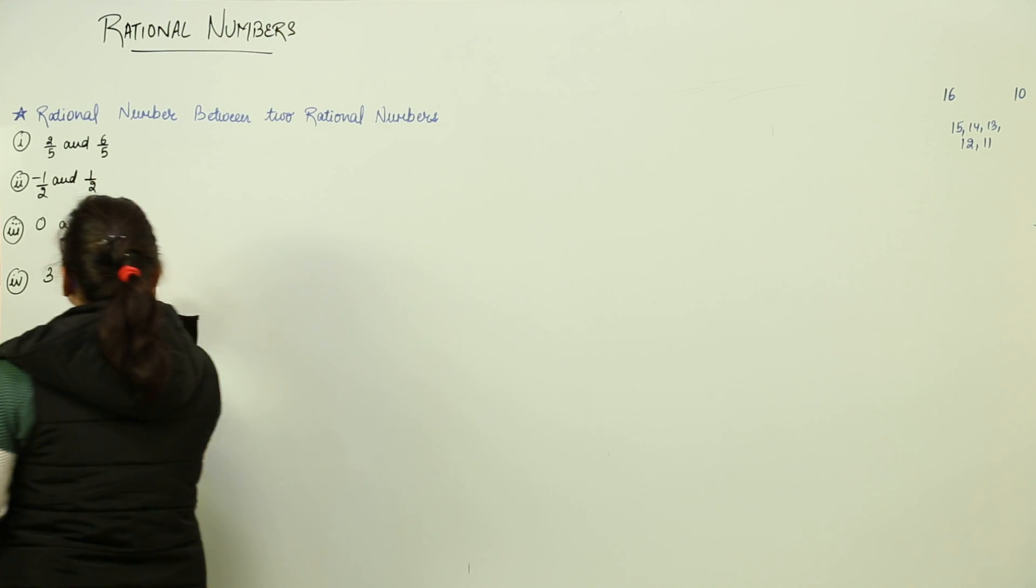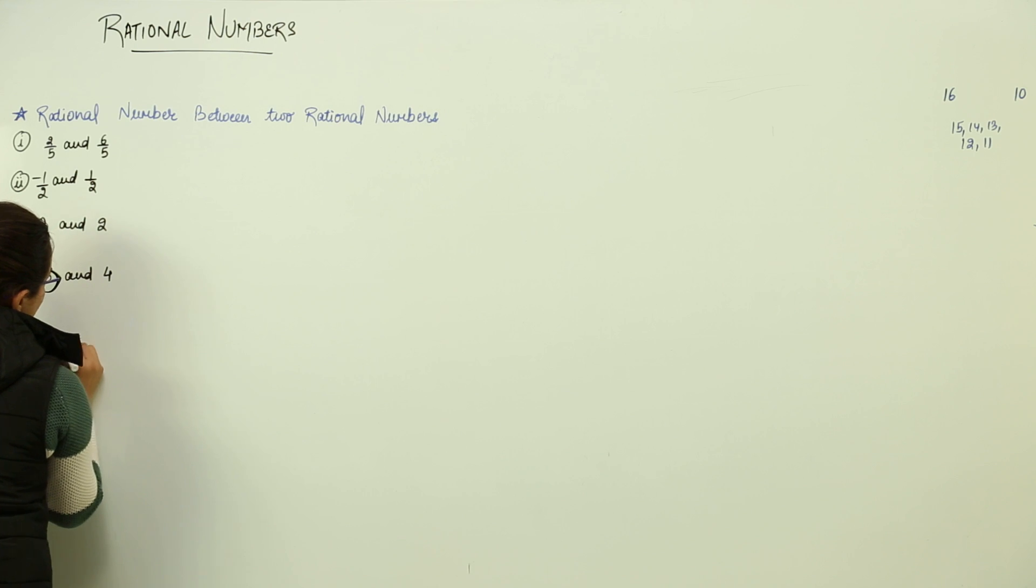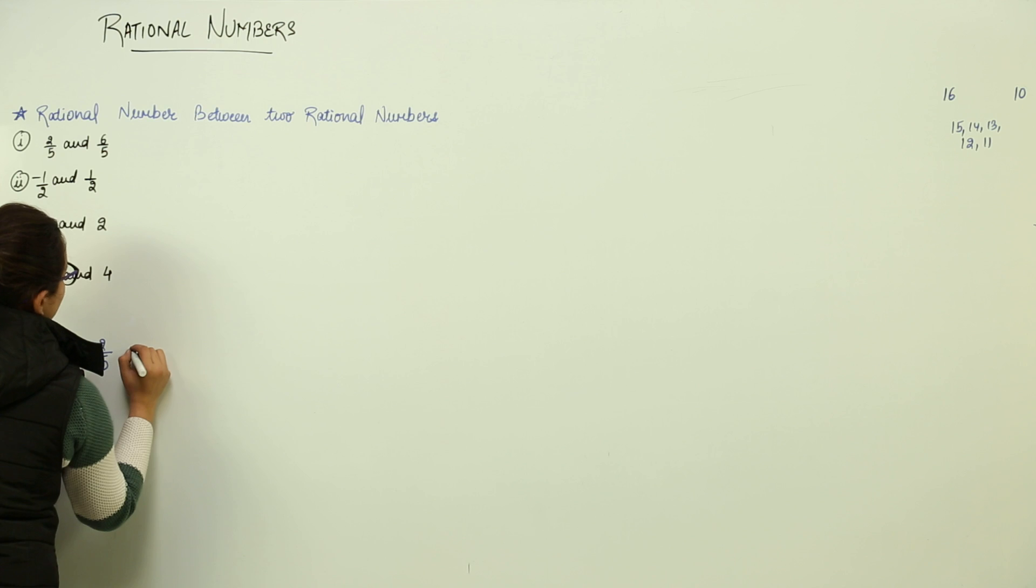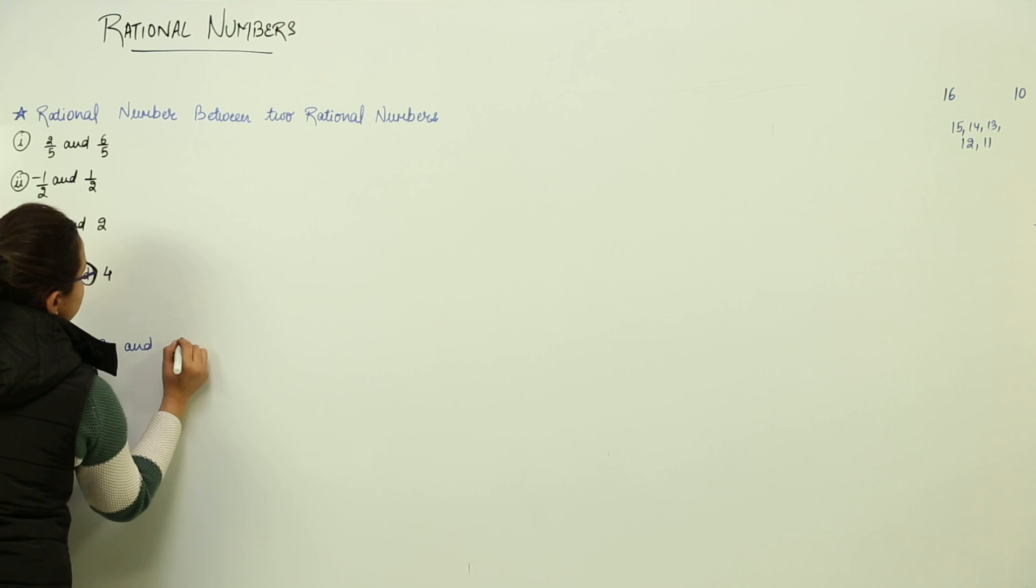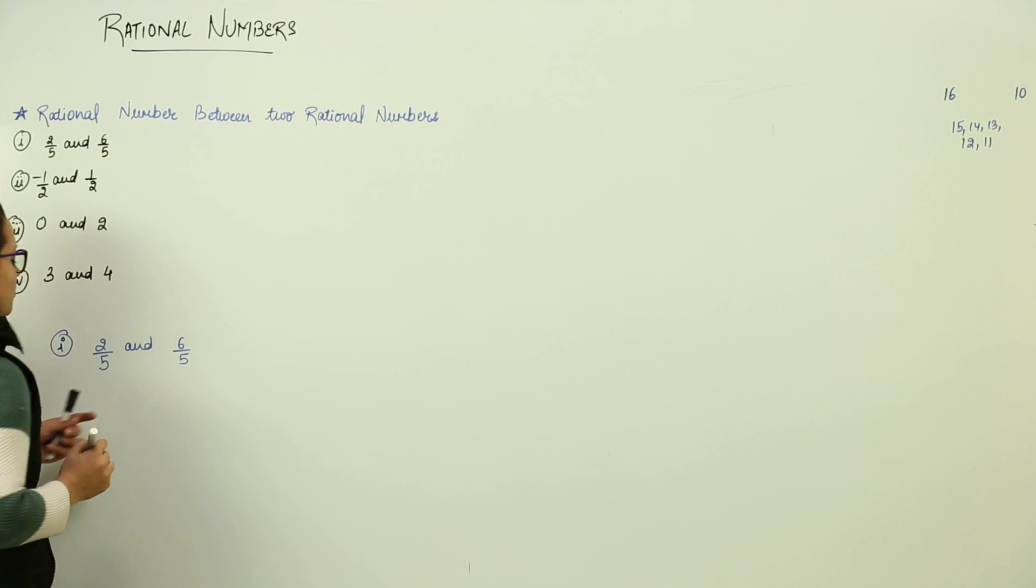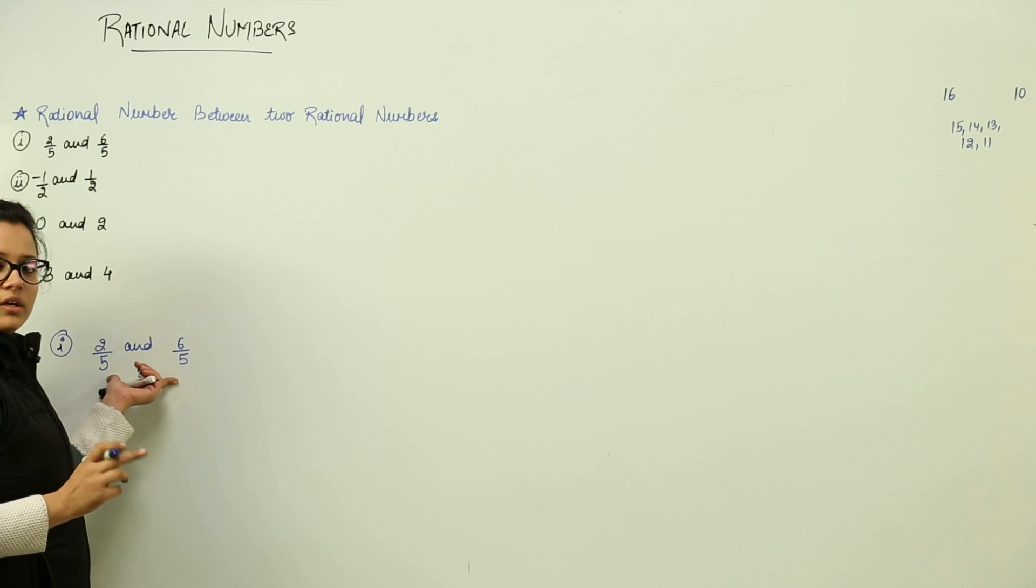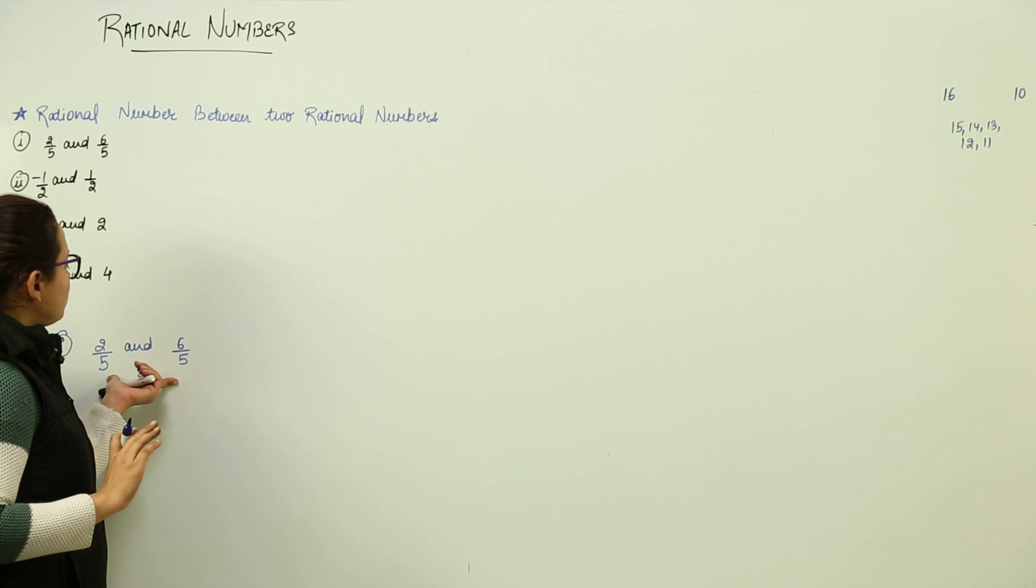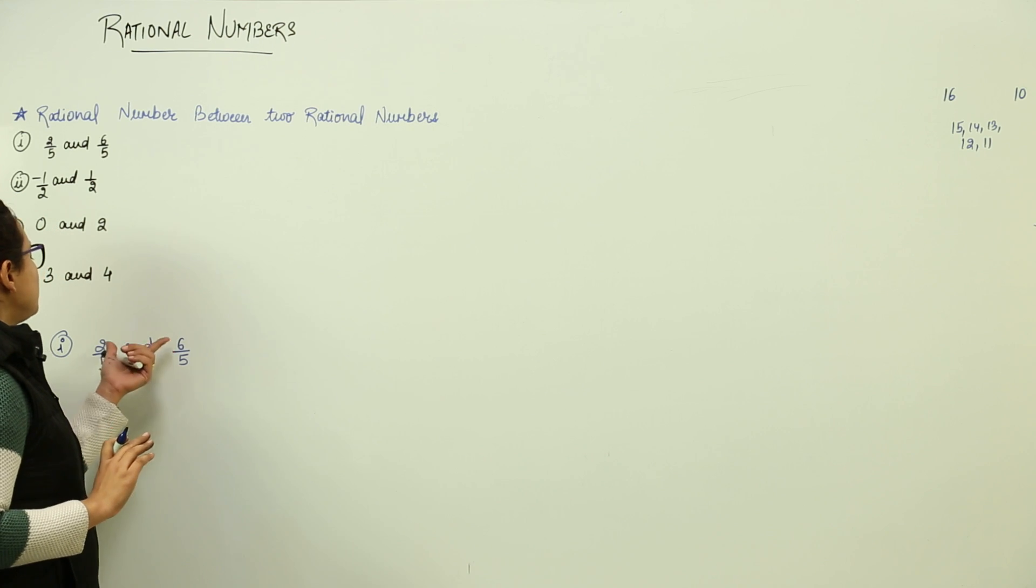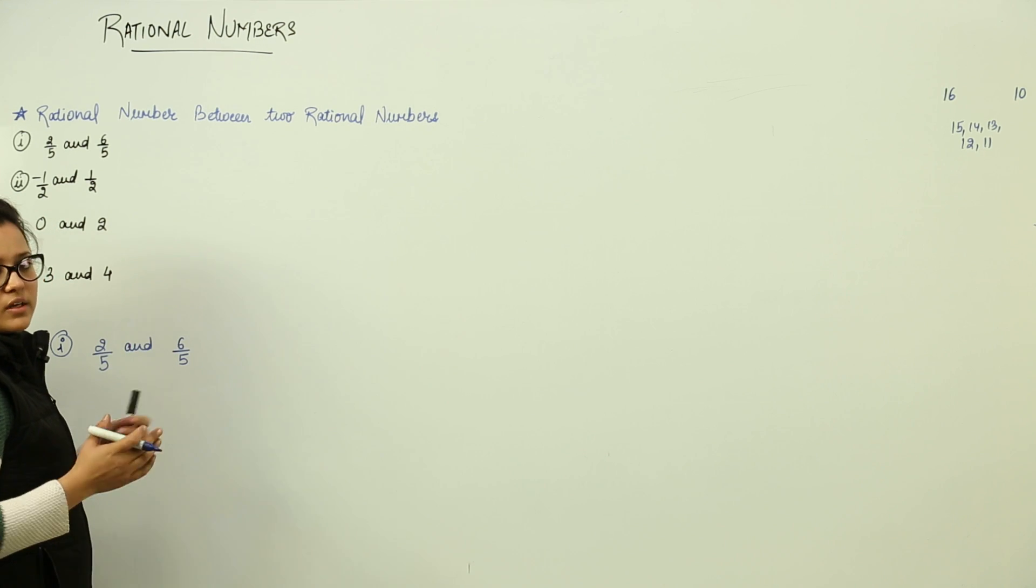Now my first type shows that, first type has if you notice the same denominator, two by five and six by five. We can notice here that since the denominator is same, we don't need to make the denominator same. What will be required to do is, we will just consider the numerator.